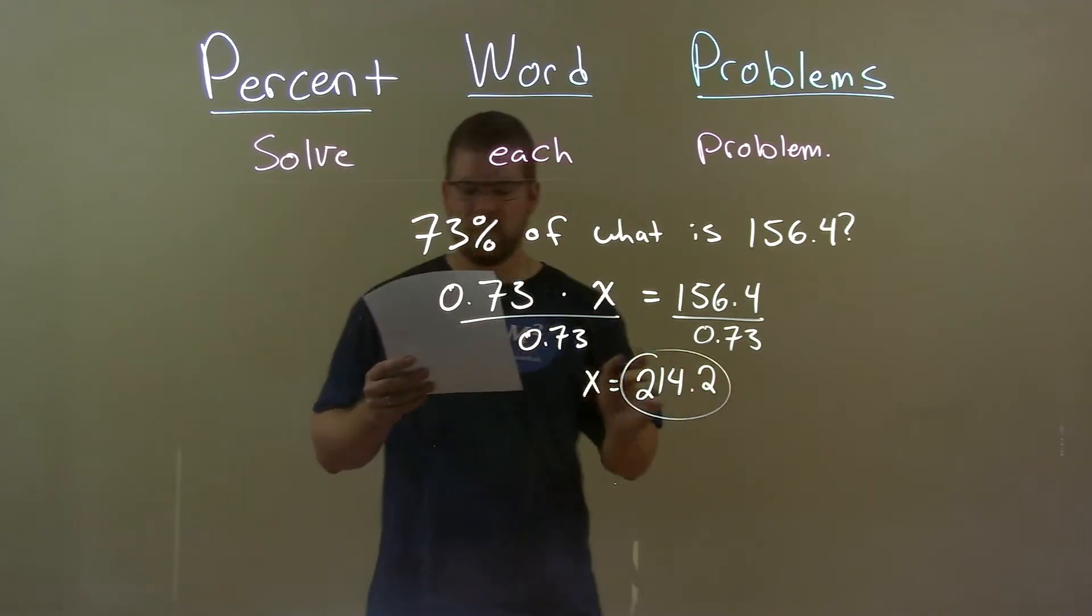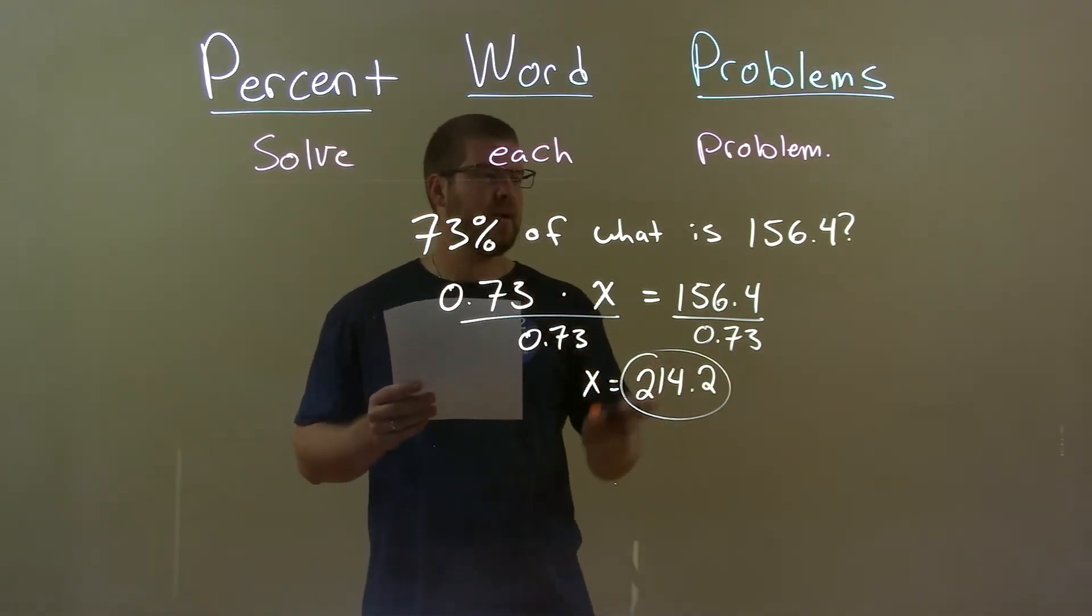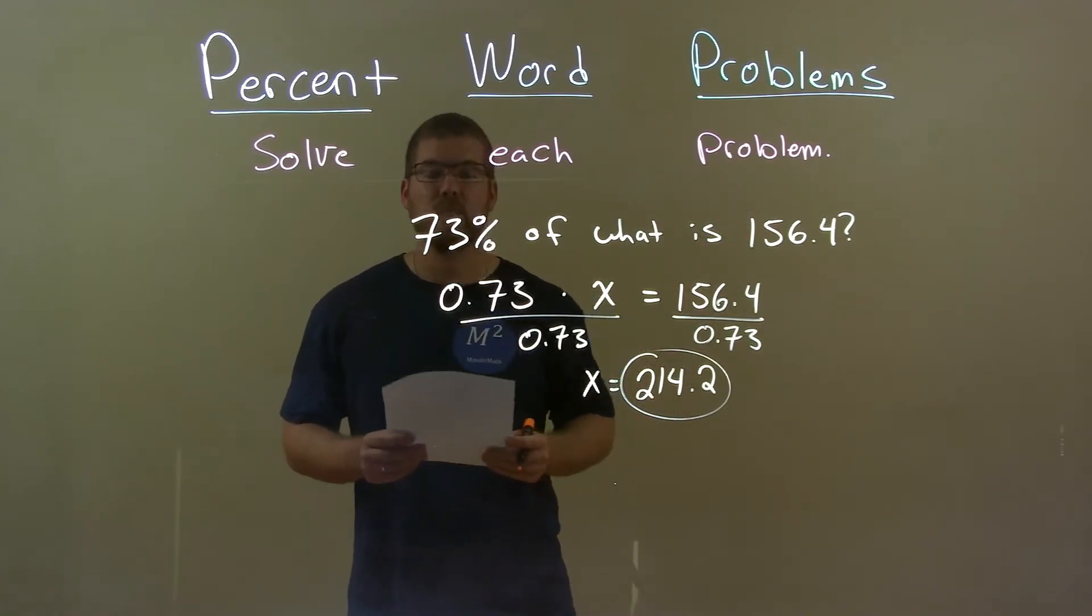And so there is my final answer: 73% of 214.2 is 156.4.